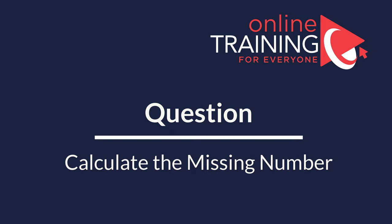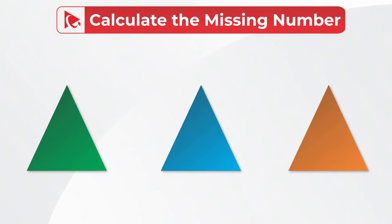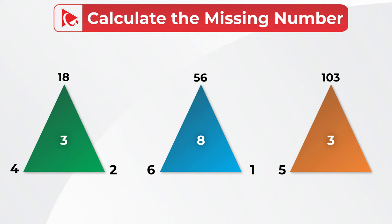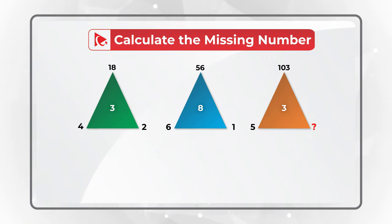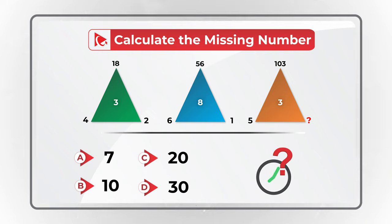Here is a very interesting question to see how quickly and effectively you can solve the challenge. You are presented with three triangles, each with numbers in the corners and a number in the middle. The first triangle has numbers 4, 18, and 2, with 3 in the middle. The second triangle has outside numbers 6, 56, and 1, with 8 in the middle. The third triangle has 3 in the middle and numbers 5 and 103 on the outside. The upper right corner of the third triangle has a missing number. Choices: A: 7, B: 10, C: 20, D: 30.